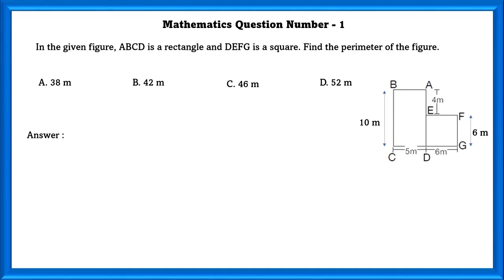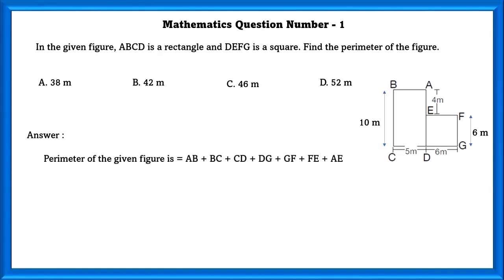In order to find the perimeter, we need to find the missing sides. Squares have all sides equal and since one side is 6, all the other sides are also 6. Now 6 plus 4 is equal to 10, that is BC. Now we know all the missing units so we will add them all up, which is equal to 42 meters.